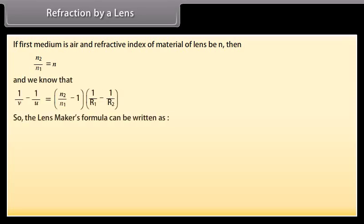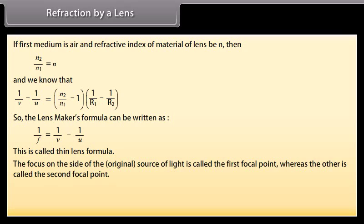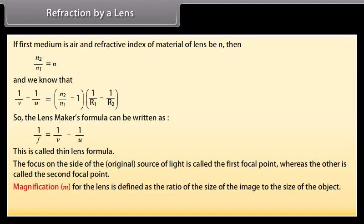This formula is called the lensmaker's formula, which also holds for a concave lens. If the first medium is air and the refractive index of the lens material is N, then N2/N1 = N. This gives the thin lens formula. The first focal point is on the side of the source of light, and the other is called the second focal point. Magnification M is defined as the ratio of image size to object size: M = h′/h = V/U.